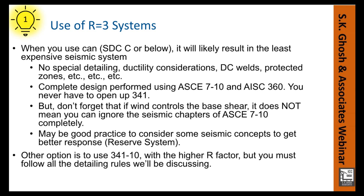So you can work with ASCE 7-10 or now 7-16, and AISC 360. But as I mentioned, you do have to make sure that if you're in a low seismic zone that wind won't control your base shear — and even if that happens, you still have to deal with the seismic chapters of ASCE 7-10, even though it doesn't control the base shear. There's also something called the reserve system — there are papers on this by Eric Hines, H-I-N-E-S, at Tufts University, who wrote good papers on the reserve system that can get better performance for R equals three type systems.